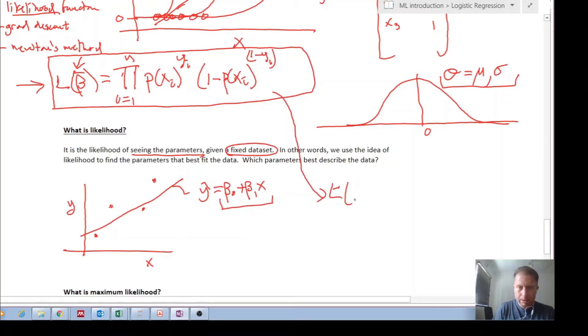So the likelihood of your beta parameters, the likelihood of your beta parameters being the real beta parameters, is equal to pi. By the way, pi means product. So i equals 1 to n. And let's put in that probability is 1 over 1 plus e to the minus beta transpose x to the power of yi times 1 minus yi.